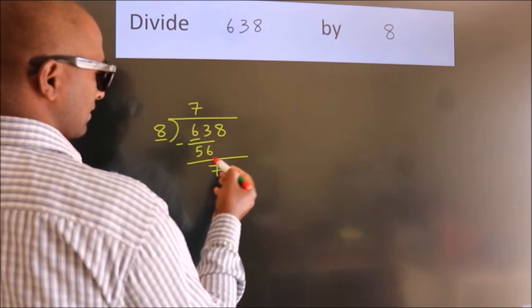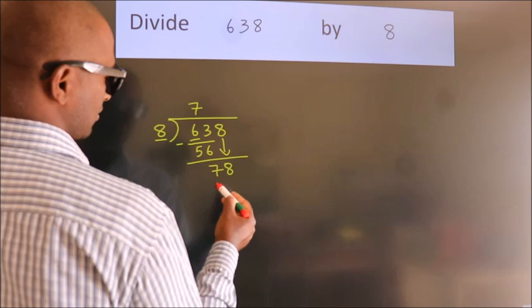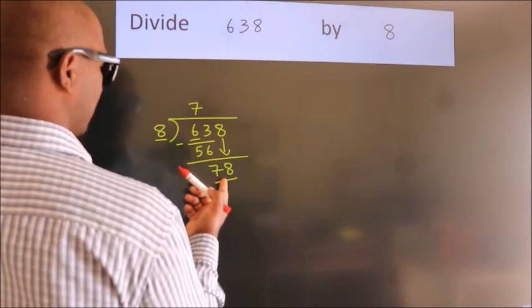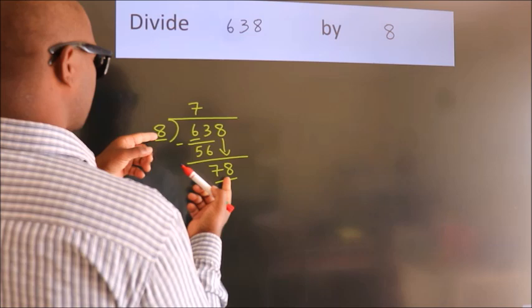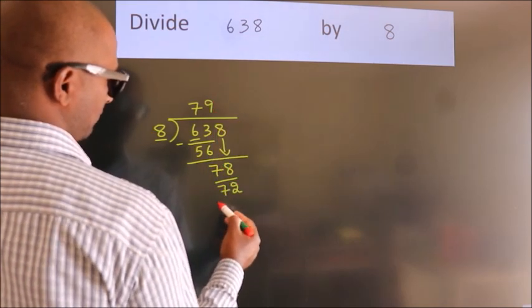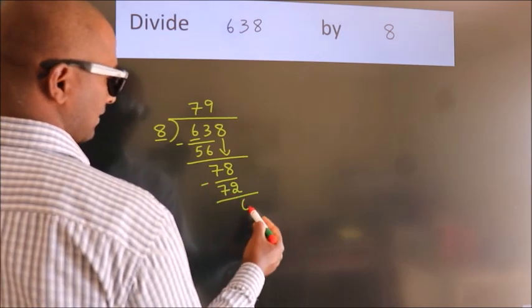After this, bring down the next number. So, 8 down. So, 78. A number close to 78 in the 8 table is 8 times 9 equals 72. Now we subtract and we get 6.